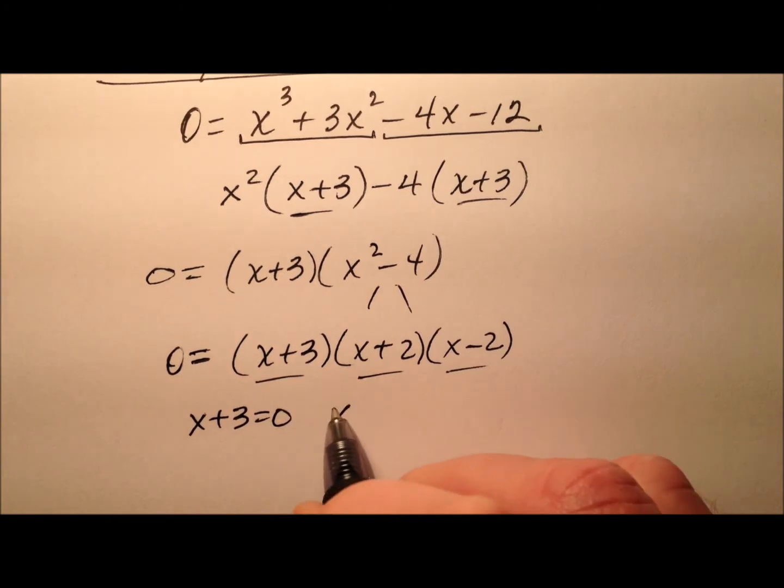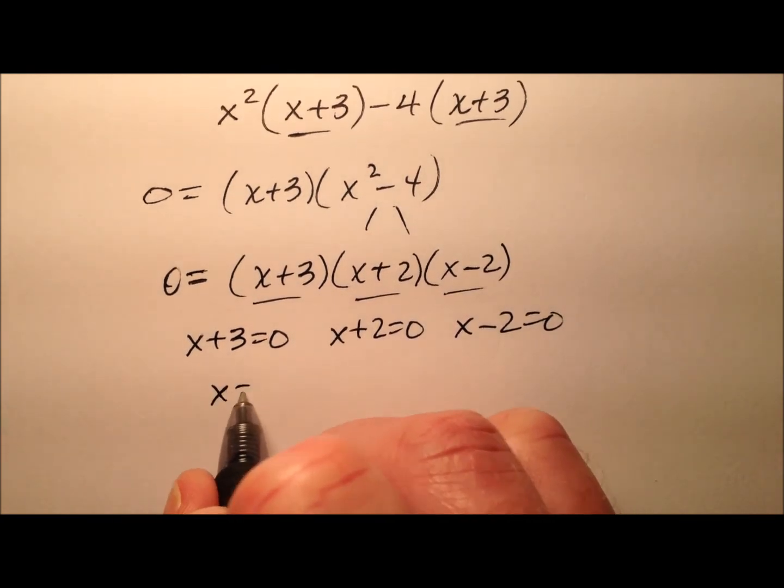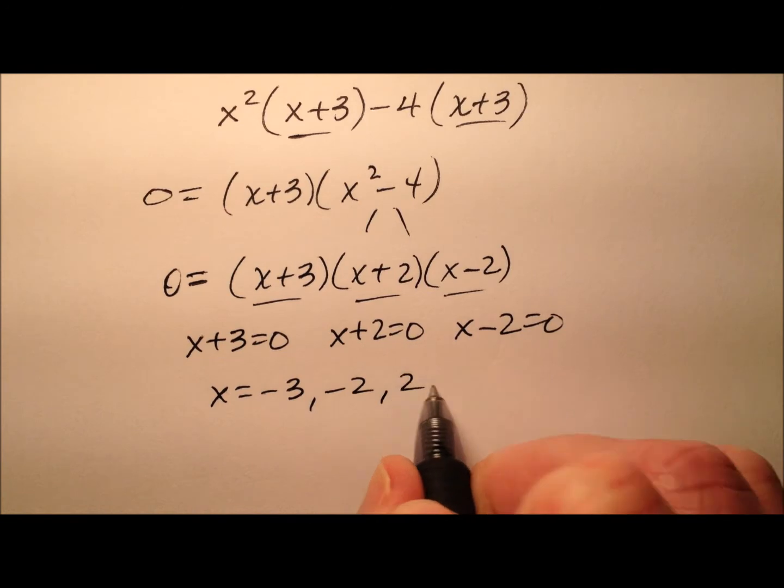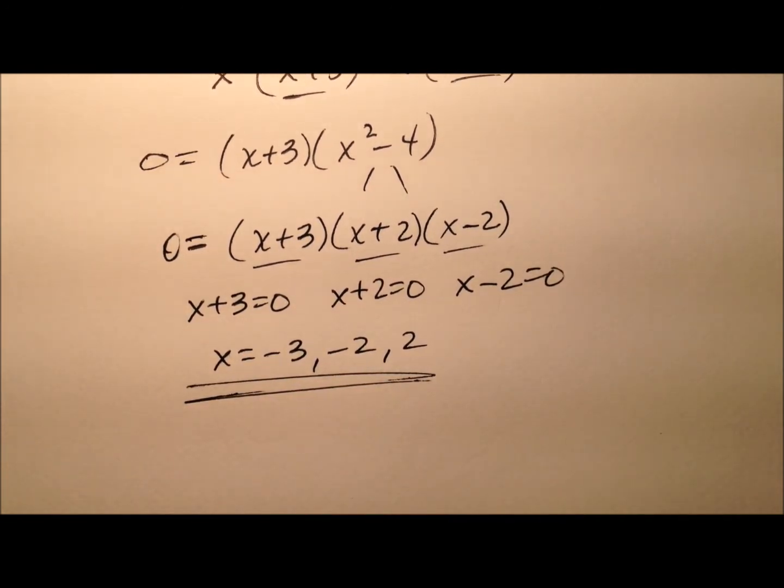So x plus 3 equals zero, x plus 2 equals zero, x minus 2 equals zero. So here we have a negative 3, here we have negative 2, and here we have positive 2. So lots of values for x here. We have three of them.